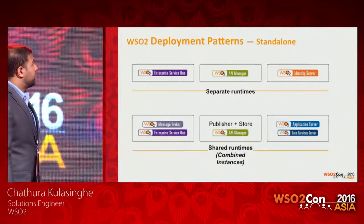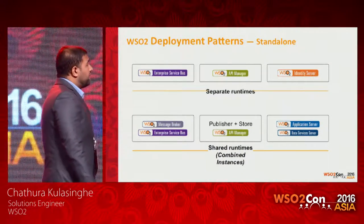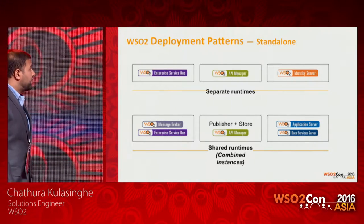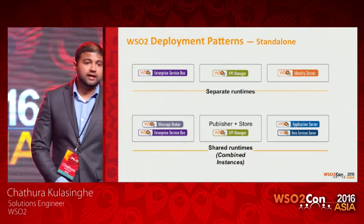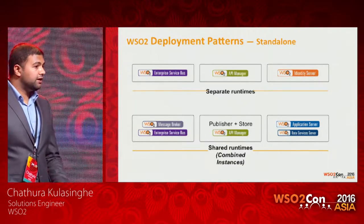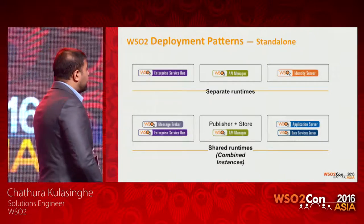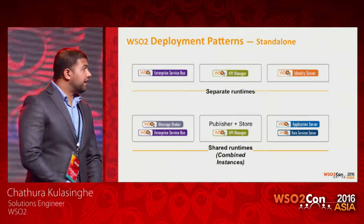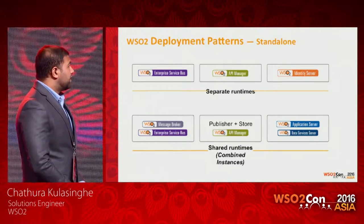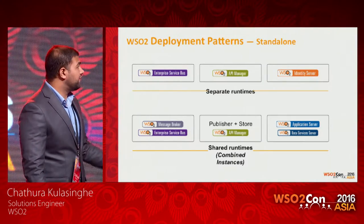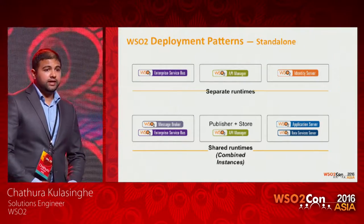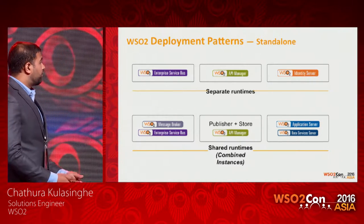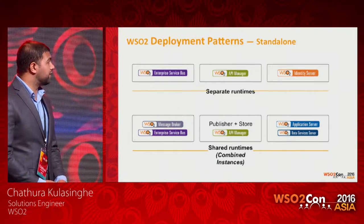The next topic is about deployment of these products. At the top, we have separate runtimes like WSO2 Enterprise Service Bus, API Manager, and Identity Server — these are products you can download from the WSO2 website and run directly. We also have the concept of a combined instance, where you identify features that make sense to integrate and combine products into one runtime, such as ESB and Message Broker, or different profiles of WSO2 API Manager.